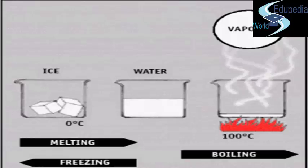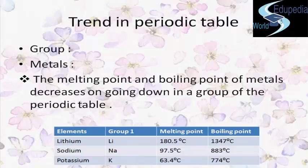Now let's understand how these concepts relate to elements in the periodic table. When talking about groups, we refer to metals and non-metals as the two major divisions. Metals are kept on the extreme left side of the modern periodic table, starting with groups 1 and 2, while non-metals are kept on the extreme right side.